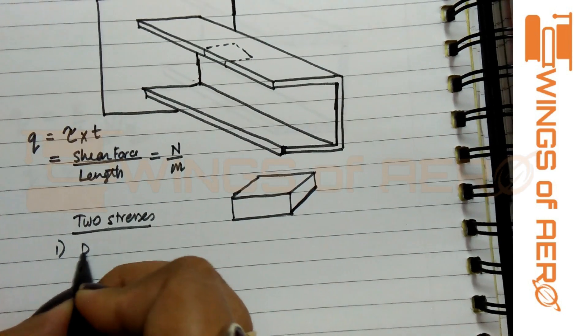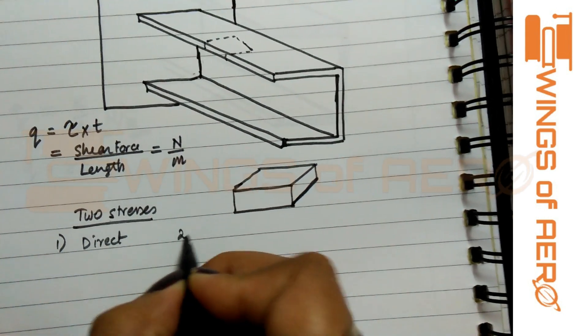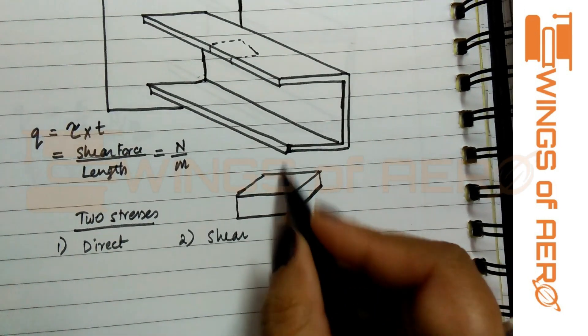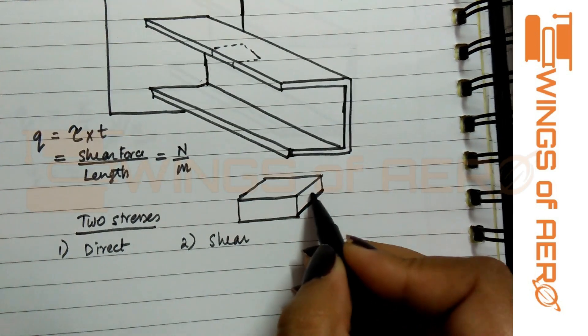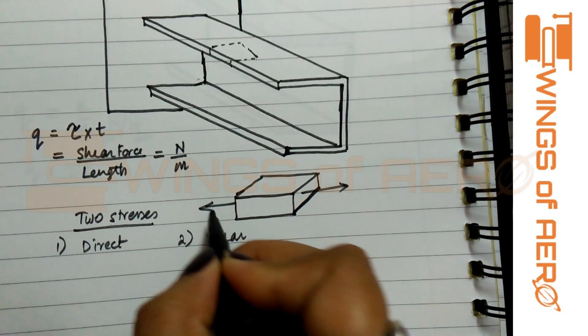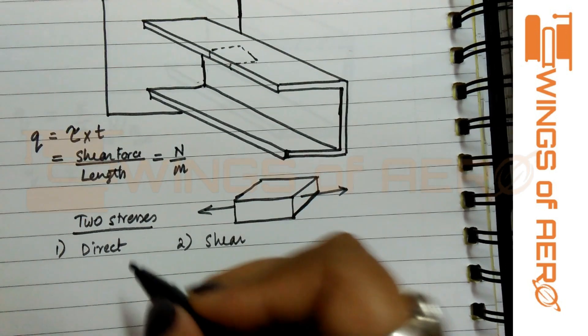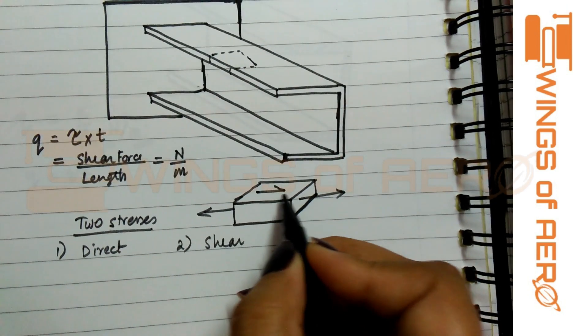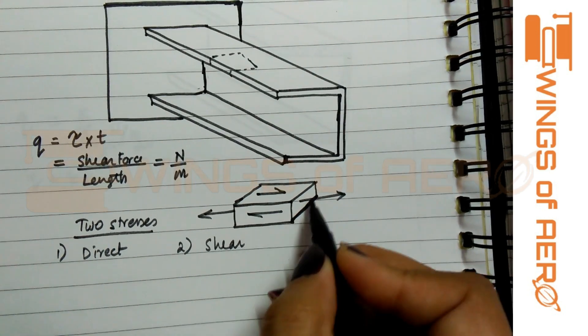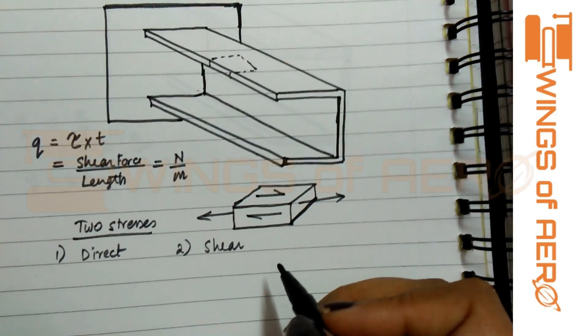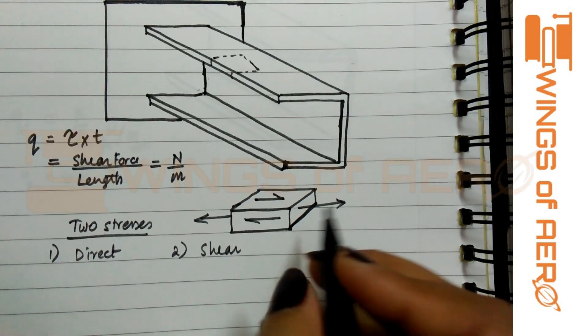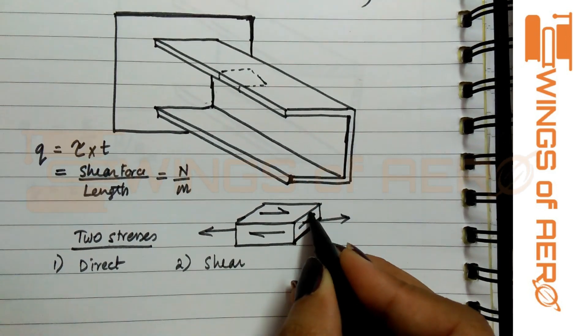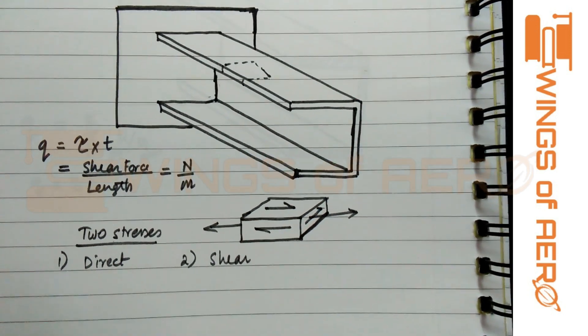When the load occurs vertically upward from this direction, a direct stress will occur, and shear will occur across the surface or along the surface on the other sides. Our main concern is to find how the shear is flowing across the entire section. Here, we will mostly deal with the cross-sectional area.